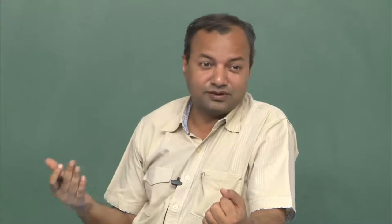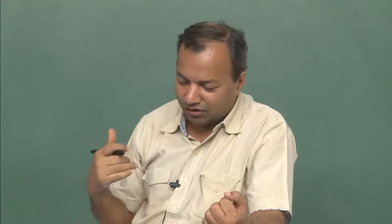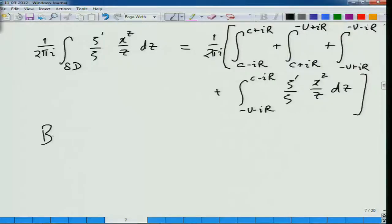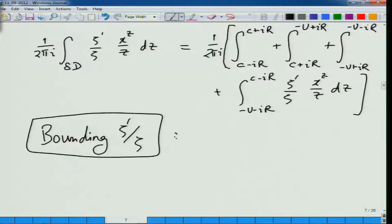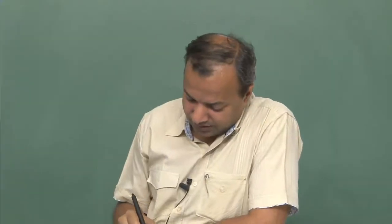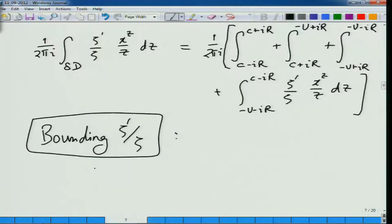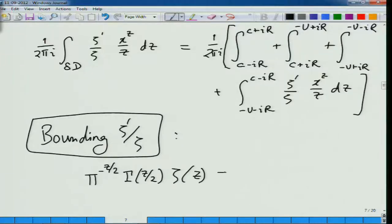So we come back to the issue of understanding ζ'/ζ, but now this time we need to bound it. To bound ζ'/ζ, we are going to make use of what we have learned about it — we have derived some expressions for this. In particular, if you recall the functional equation: π^(−z/2) · Γ(z/2) · ζ(z) equals the corresponding expression on the other side. We know that this equality holds for all z.